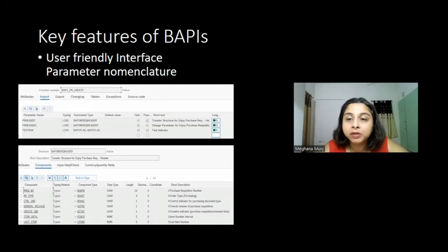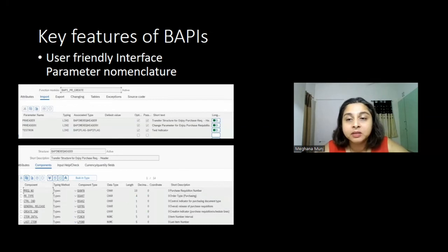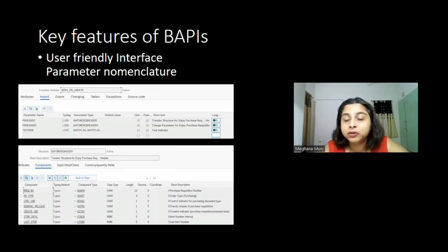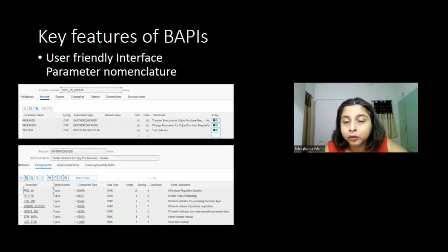What SAP has done is that in the case of BAPIs, or when you are developing your own OData services and creating your own structures to expose to the outside world, you should have user-friendly parameters. The structure name should not be VBAK — it should be 'Sales Order Header'. It should not be EKKO — it should be 'PO Header'. It should not be VBAP — it should be 'Sales Order Line Item'. It should not be EKPO — it should be 'PO Line Item'. Field names within these structures should also be user-friendly: SO number, PO number, document type, currency, amount — names that a third-party programmer can easily understand.